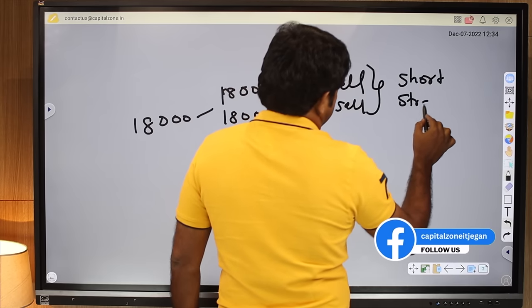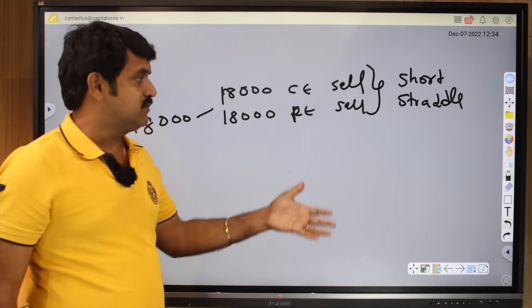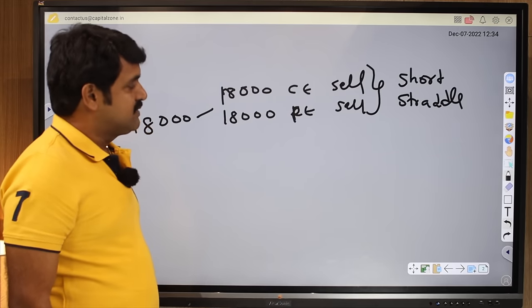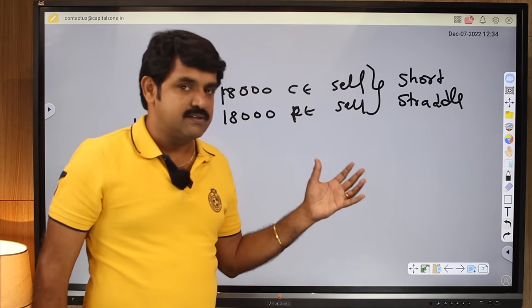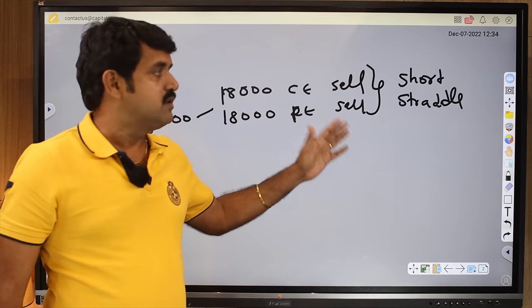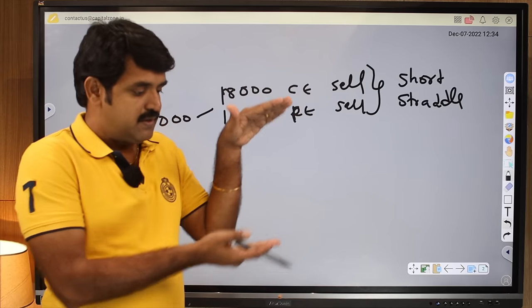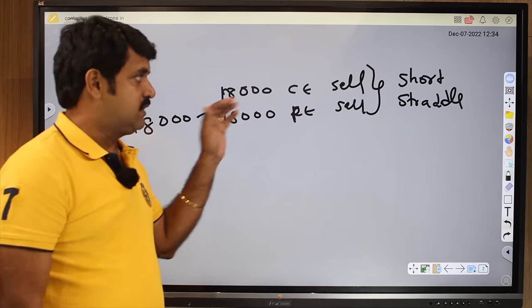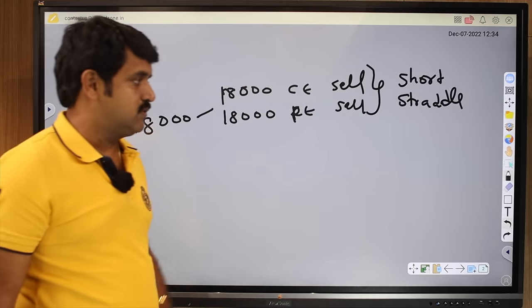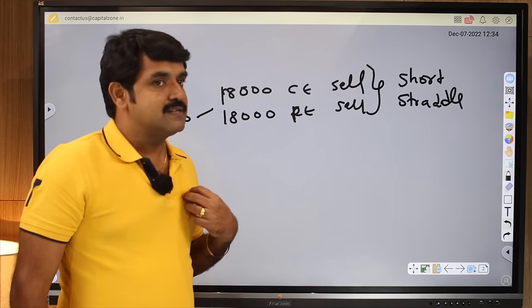We are playing with at the money ATM call and ATM put sell. This comes with unlimited risk and the profit potential is very high if market is going to be in the range bound. Most people who are coming to the market will do the short strangle OTM, then they will come to the ATM and do this, which is called short straddle. Over a period of time they will realize it is unlimited risk.